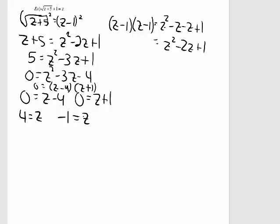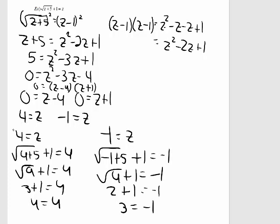I want to check to see if 1 or both or none of these solutions work. When I check z equals 4, the last line is 4 equal to 4 — that is a true statement. But when I plug in z equals negative 1, the last line is 3 equal to negative 1 — that is not a true statement. So I only have one solution here, and that's z equal to 4.